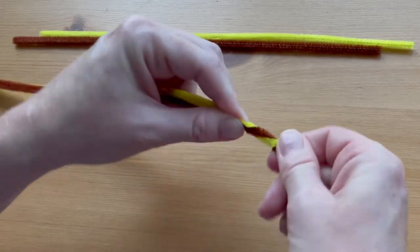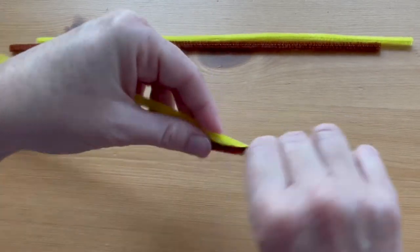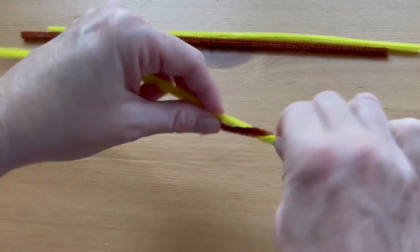Twist one of the brown and one of the yellow pipe cleaners together. Do this for the whole length of the two pipe cleaners.